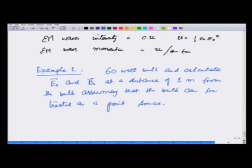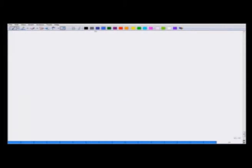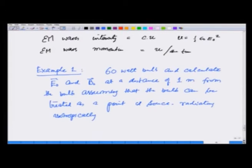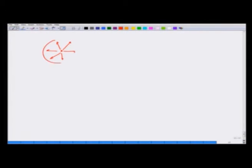So I am taking this bulb to be a point source which is radiating isotropically, that means there is no particular direction in which it radiates preferably. So what I have is a bulb here which is giving out radiation in all directions. And we want to see at 1 meter what is the associated electric field. So all the electromagnetic waves are propagating in the radial direction. Let us look at one particular direction going to the right - electric field is going to be perpendicular to that and so is the magnetic field.